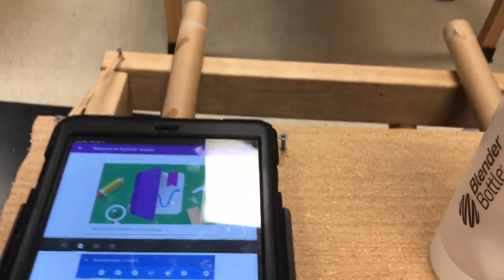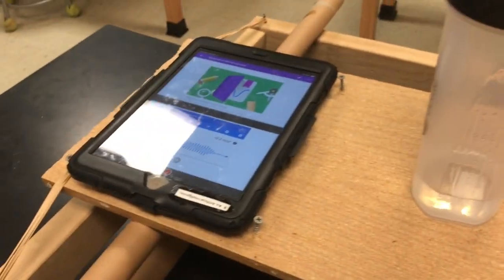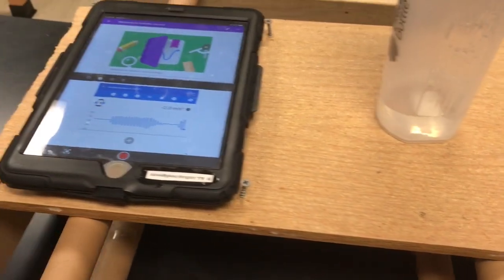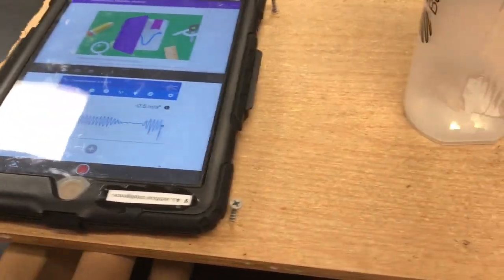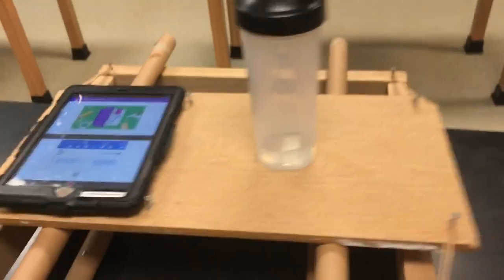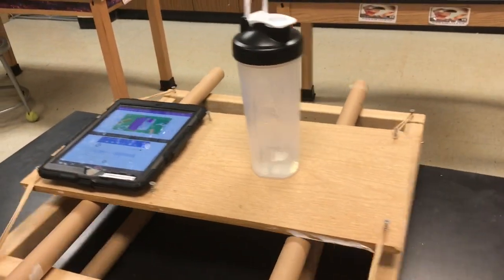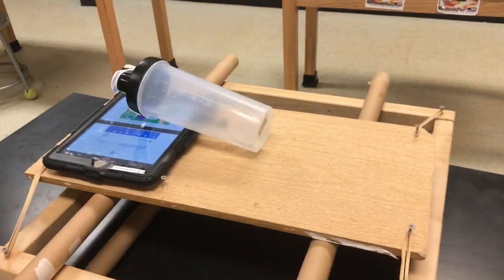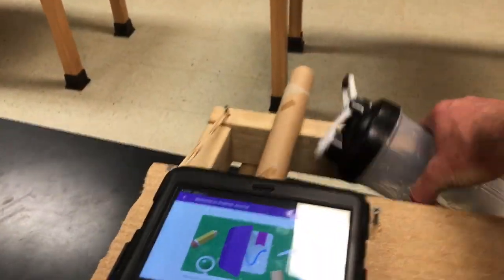And then we have the Google Science Journal app. And sure enough, when you wiggle, it measures exactly how powerful those vibrations are. And your goal is to keep your tower from falling over. Game over.